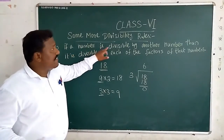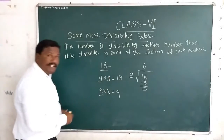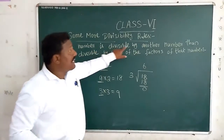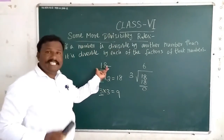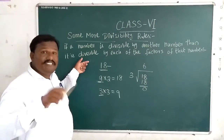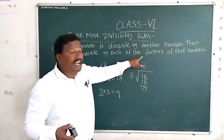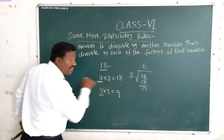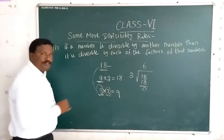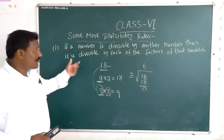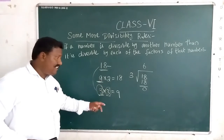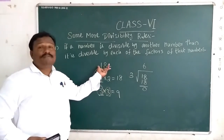If a number — 18 is the number — is divisible by another number, say 9, then 18 is also divisible by each of the factors of 9. The factor of 9 is 3 times 3. So the factors of 9 include 3, and we can divide 18 by 3 also.